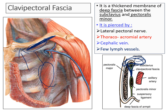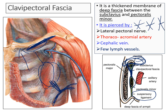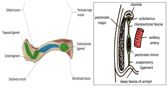After enclosing subclavius, the fascia splits again to enclose pectoralis minor, then continues as the suspensory ligament attached to the axillary fascia. A very important MCQ: what structures pierce the clavipectoral fascia? They are the cephalic vein, the thoracoacromial artery, and the lateral pectoral nerve. The subclavian groove and its lips are where the fascia attaches to the clavicle to enclose the subclavius muscle.